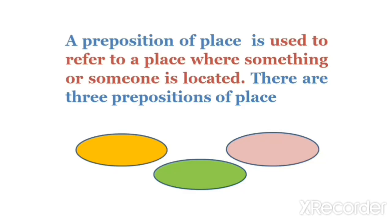A preposition of place is used to refer to a place where something or someone is located. कोई भी व्यक्ति या वस्तु किस जगह पर है, यह बताने के लिए prepositions of place का use किया जाता है। Basically, prepositions of place में हम in, on, और at के साथ ही above, over, और under के बारे में भी पढ़ेंगे।